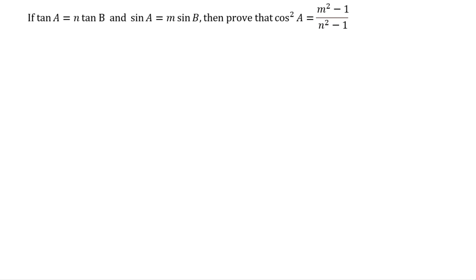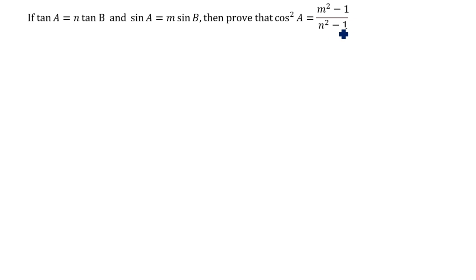Hi friends. Today we are going to learn about a trigonometry identity problem. This is a very important problem. If tan a is equal to n tan b and sin a is equal to m sin b, then prove that cos square a is equal to m square minus 1 divided by n square minus 1.